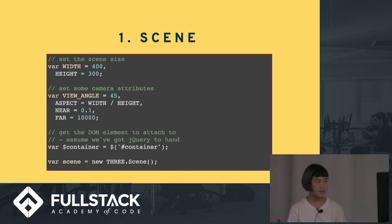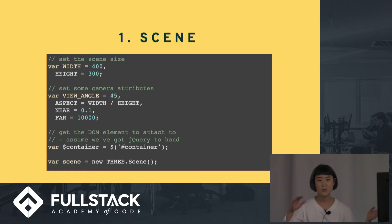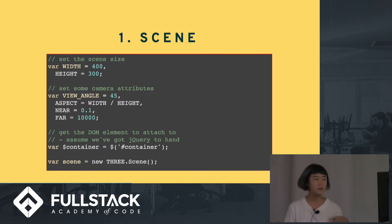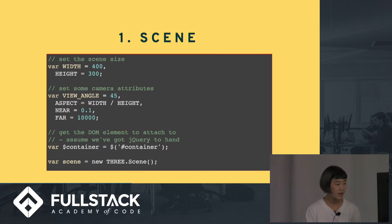In order to set the scene, as Jihei talked about in her Tech Talk, you basically set the scene width and height. You can set it for the size of your window, which will make it responsive. You can set some camera attributes — you can set the aspect near-far ratio. And you basically have to append everything to your container to make it show up on your screen. To make the scene, it's just that one line: var scene = new THREE.Scene().